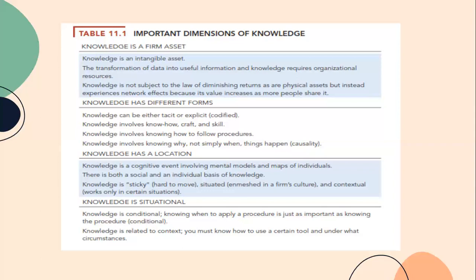The third dimension is: knowledge has a location. Knowledge is a community event involving mental models and maps of individuals, with both a social and individual basis. It is tricky, or hard to move, situated, and contextual. The fourth is: knowledge is situational. Knowledge is conditional — knowing when to apply a procedure is just as important as knowing the procedure. Knowledge is related to context, as you must know how to use a certain tool and under what circumstances.